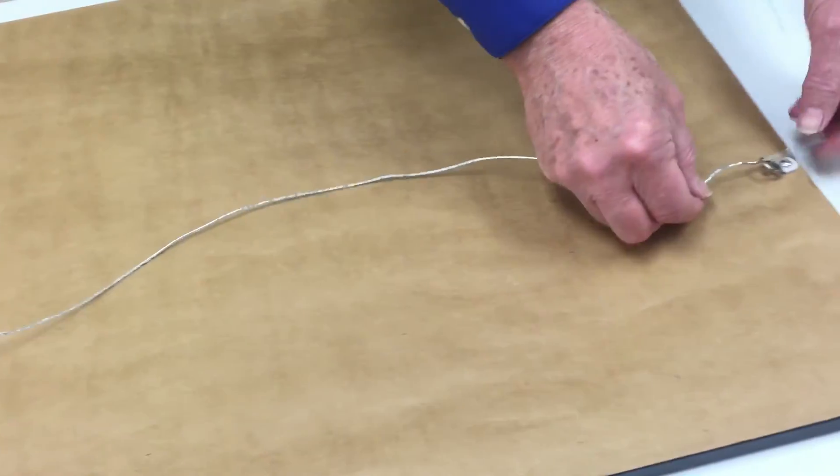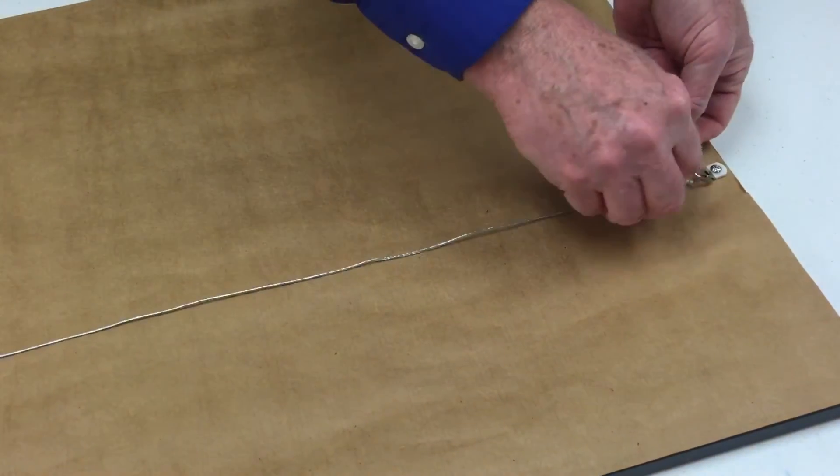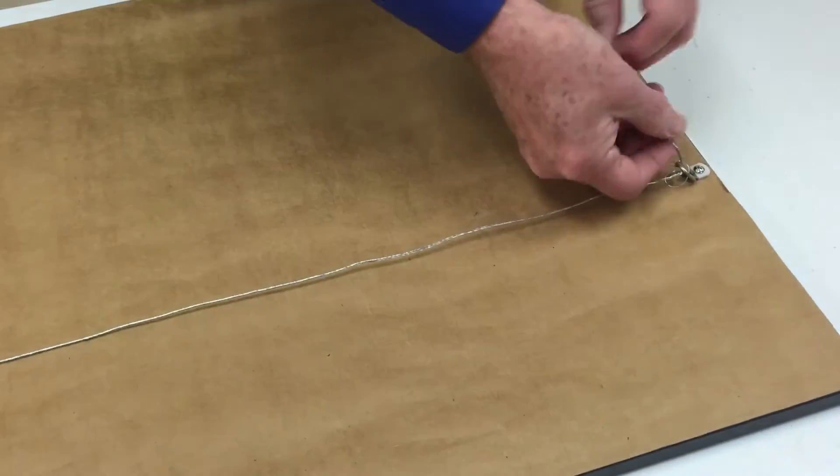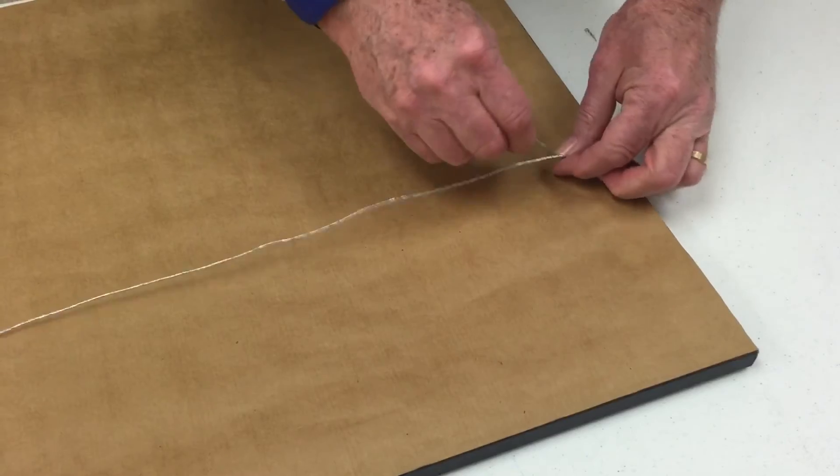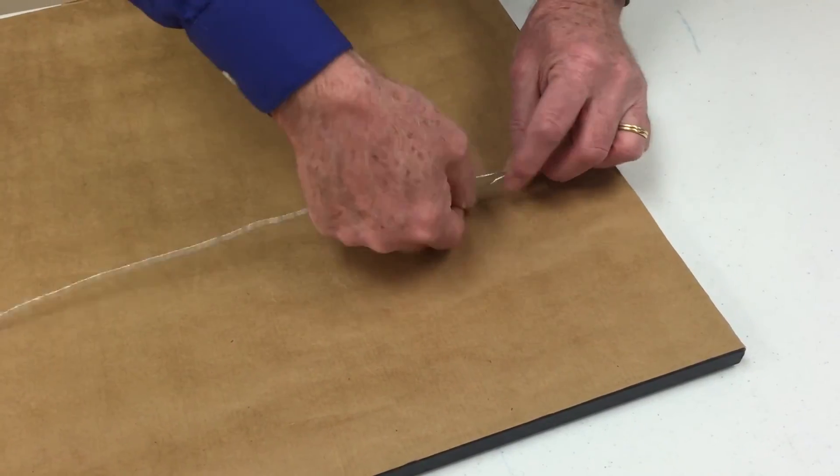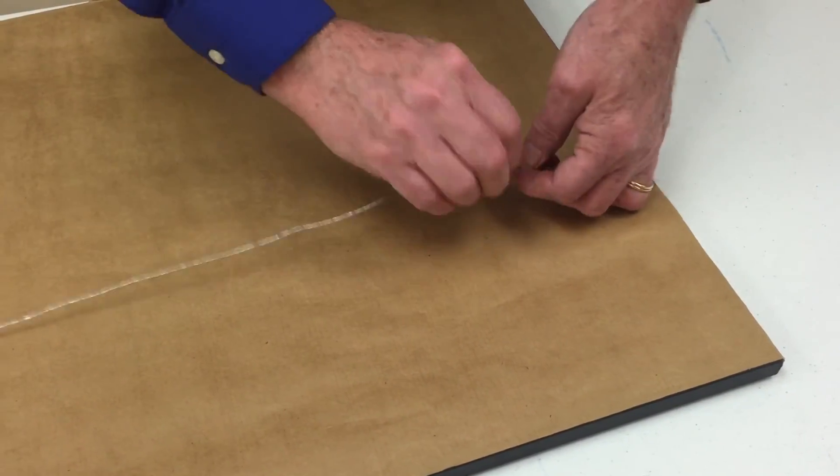And then you're going to do exactly the same thing to the other side. Put it through once, put it through a second time, pinch it, and then start to wrap it around just like this.